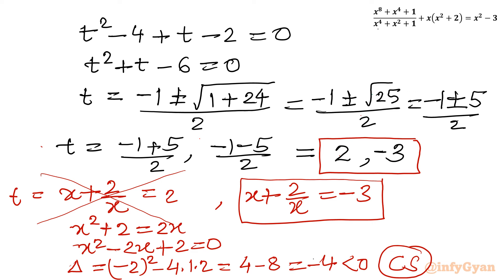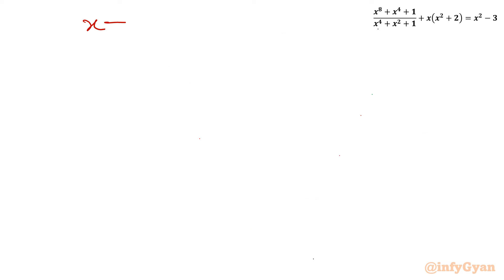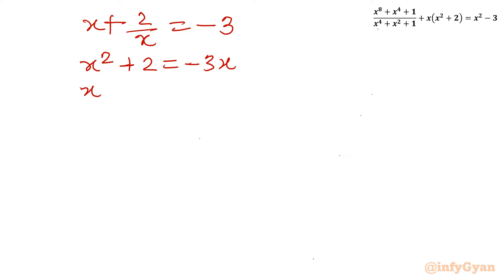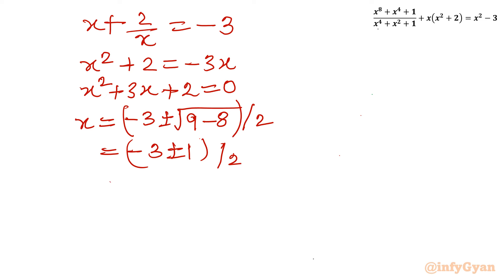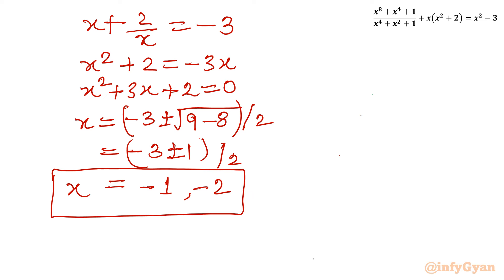The second case is x + 2/x = -3. Multiplying both sides by x: x² + 3x + 2 = 0. Applying the quadratic formula: x = (-3 ± √(9 - 8)) / 2 = (-3 ± 1) / 2. This gives x = -1 and x = -2. So there are two real solutions for the given rational equation challenge.